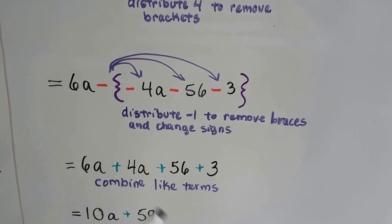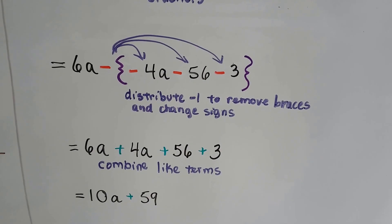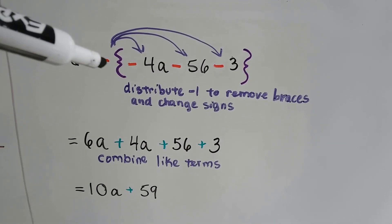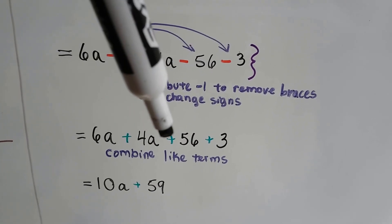There's a negative here. We're going inside. We just change the signs. That gives us a positive 4a, a positive 56, and a positive 3.